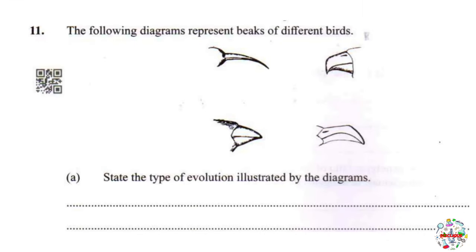Moving on to question 11: the following diagrams represent beaks of different birds. We can see that the beaks are of different shapes, sizes, and lengths. Part A: state the type of evolution illustrated. This type of evolution is referred to as divergent evolution. In divergent evolution, organisms have a common ancestor but diverged at some point because they were exposed to different environments — in this case, different diets. These birds feed on different types of food, and that is why they evolved different types of beaks.